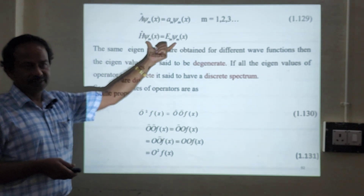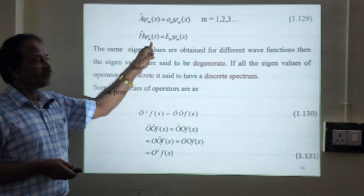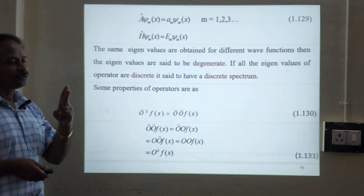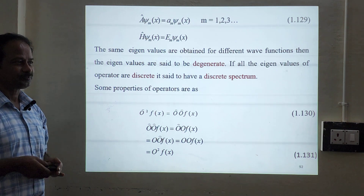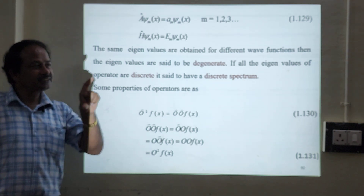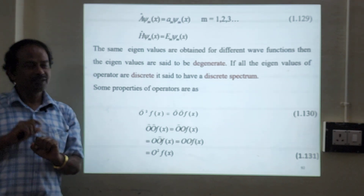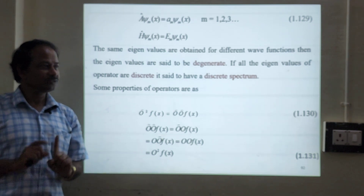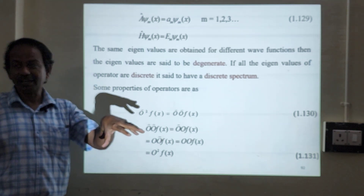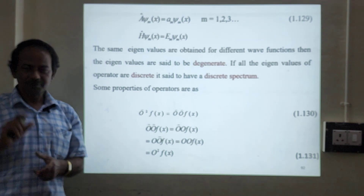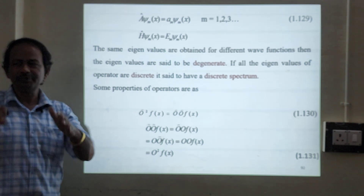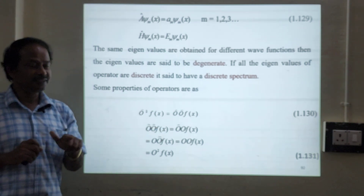The eigenvalue equation can be written generally as: Hamiltonian operator Ĥ operating on psi_m(x) gives E_m psi_m(x). Now we have two concepts: non-degenerate and degenerate. For each wave function, each eigenvalue exists — this is non-degenerate. For many wave functions we can have a single eigenvalue — this is degenerate.